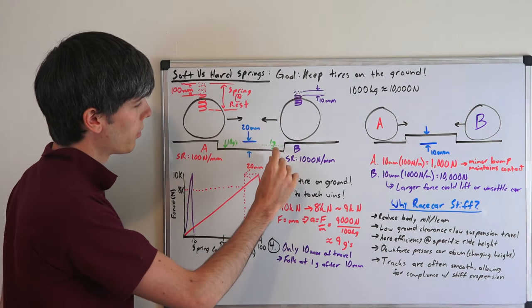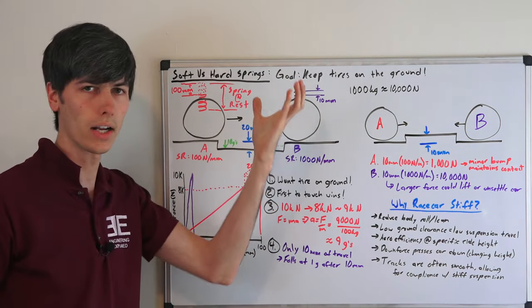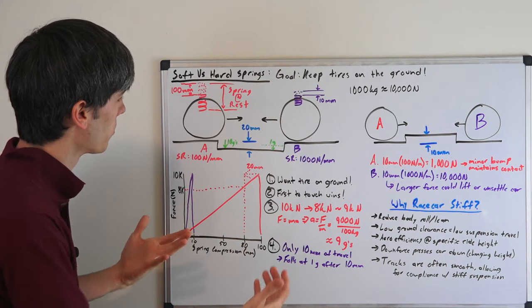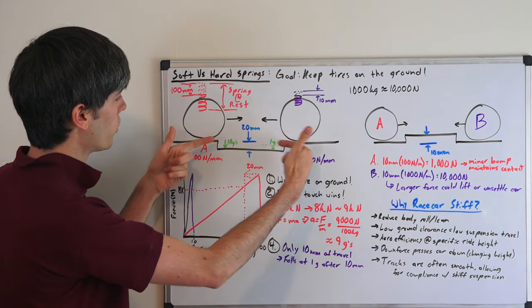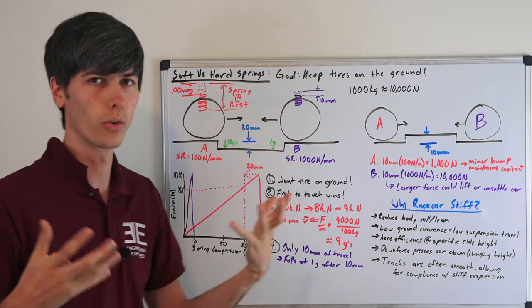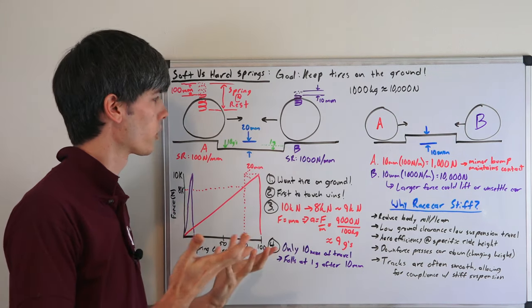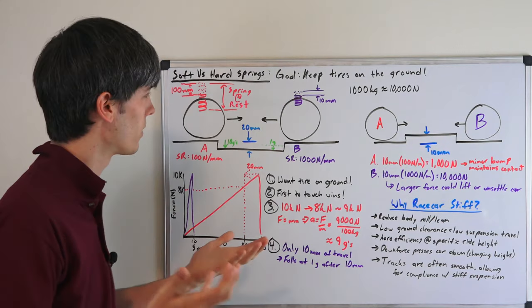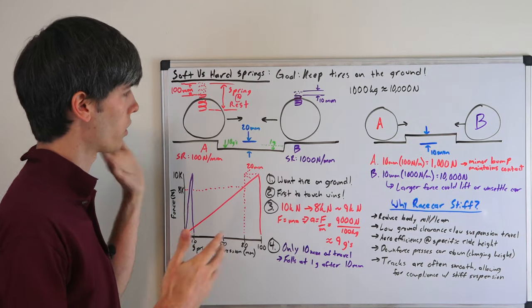So for those last 10 millimeters, you've only got one G acting on that tire to bring it down. And hopefully it does maintain contact at some point, or you just skip over this bump entirely. But the point is you won't have contact. So the wheel and tire can't be doing what they're supposed to be doing, which is maintaining contact, allowing the car to accelerate, turn, whatever it's doing.